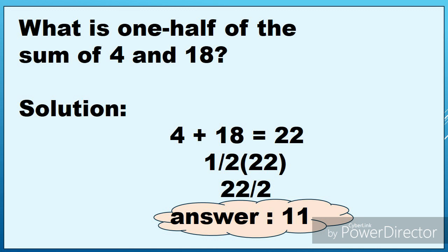Next problem: what is 1 half of the sum of 4 and 18? Sum of 4 and 18 — kukunin muna natin yung sum, i-add. 4 plus 18 equals 22. Then, ita-times natin yung 22 sa 1 half. 1 times 22 is 22 divided by 2, the answer is 11.